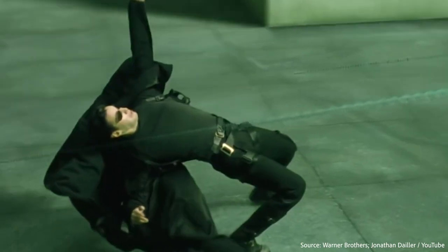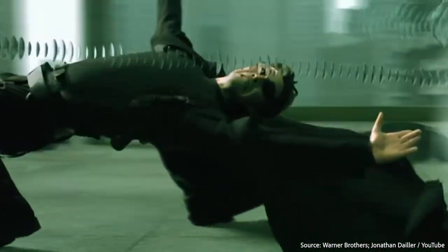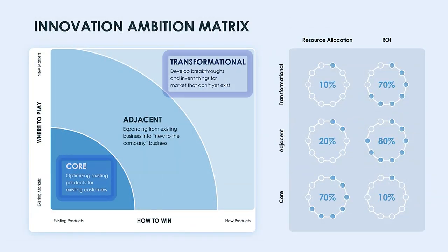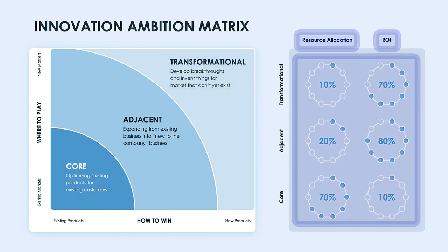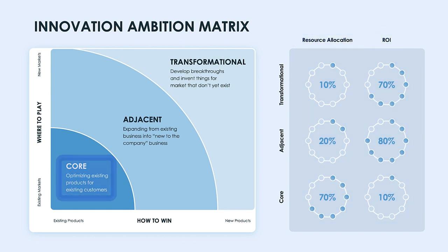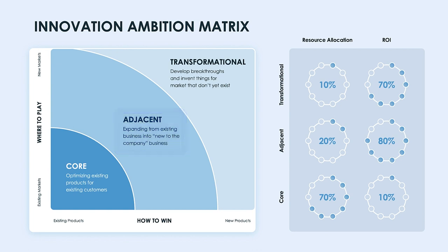This matrix tracks investments from core to transformational technologies in order to determine resource allocation and ROI via the pie charts on the right. Core refers to sustaining revenue stream technologies, while adjacent technologies build off core technologies and test the waters of new markets. Transformational technologies are completely future-focused. Stick to the end and we'll explain how Zara could use this tool to combat efforts to upend its business model.